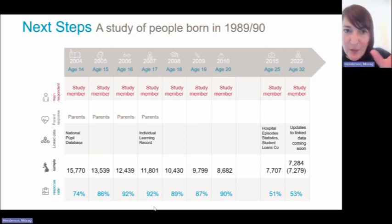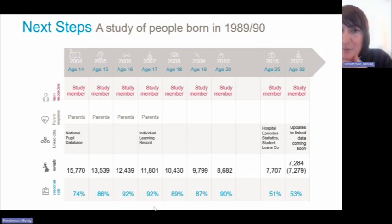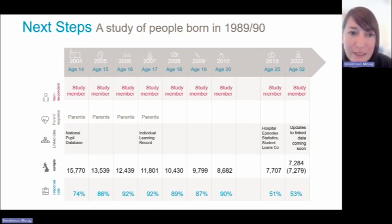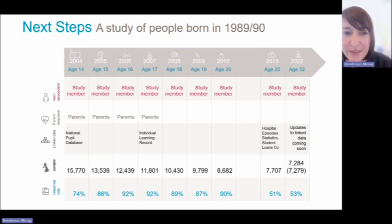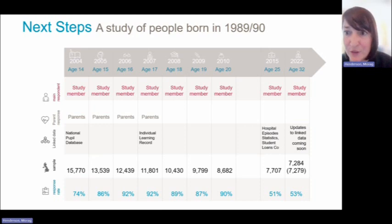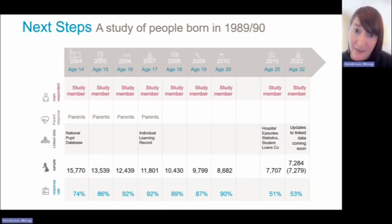To give you an overview of the study, we have this concentrated annual set of sweeps from age 14 to age 20, then an adulthood sweep when CLS picked up the study from the Department for Education at age 25, and then again at age 32. We also have information from the parents for the first four sweeps, and we have linked the Next Steps data to a number of different resources, including the National Pupil Database, the Individualised Learner Record, hospital episode statistics from the NHS, and the Student Loans Company data, with updates from Age 32 consents coming soon.